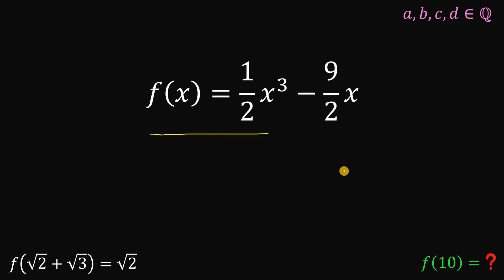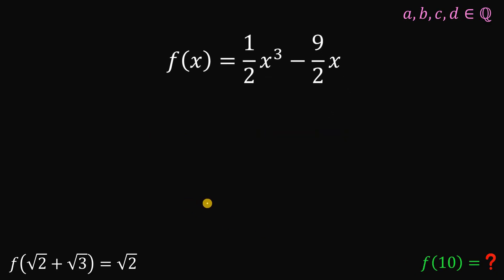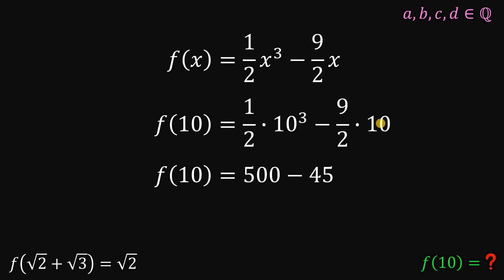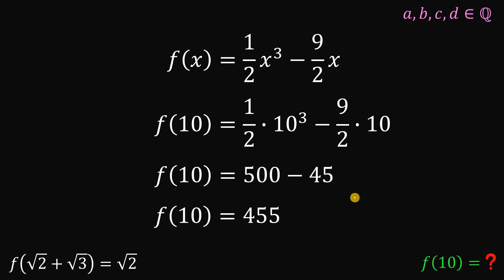Since we now have our function, we can find f of 10 by replacing all x with 10. Simplifying: 10 cubed is 1,000, divided by 2 is 500; and 10 divided by 2 is 5, times 9 is 45. So 500 minus 45 is simply equivalent to 455. And that is our answer to this question.